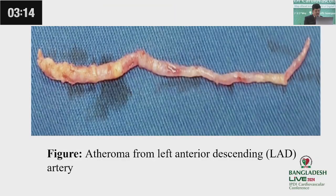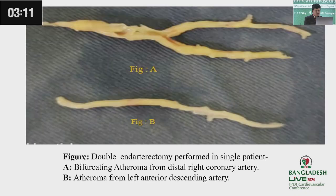This figure shows an atheroma from the left anterior descending coronary artery. This figure shows a bifurcating atheroma from the distal right coronary artery. Figure B shows an atheroma from the left anterior descending coronary artery. This bifurcating atheroma was removed from a single patient.